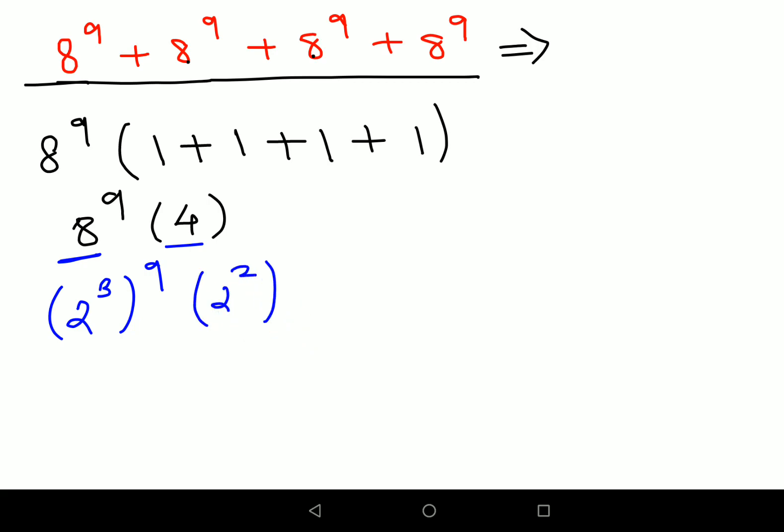So now remember a raised to m the whole raised to n is nothing but a raised to m into n. Using the same logic I will multiply the indices, so 2 raised to 3 into 9 that gets you 27 into 2 raised to 2.